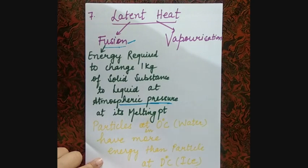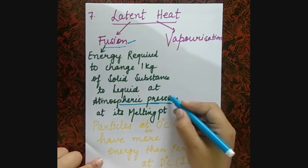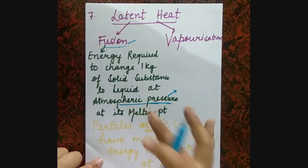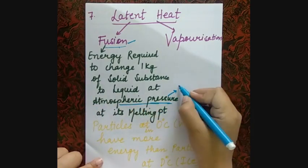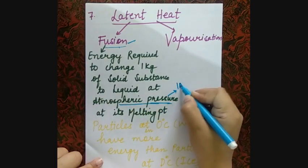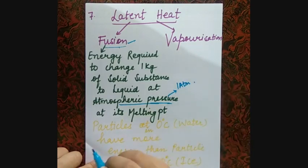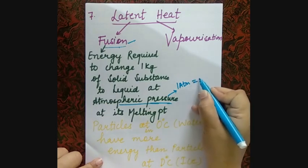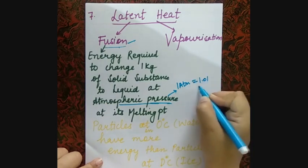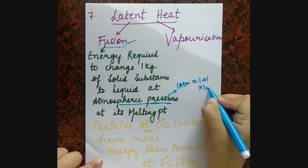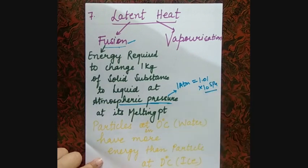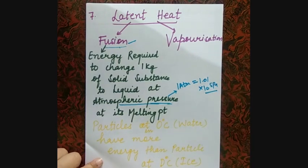1 atm equals 1.01 × 10⁵ Pascal. Remember it. We have a notation of pressure at atmospheric pressure. So 1 atm = 1.01 × 10⁵ Pascal.